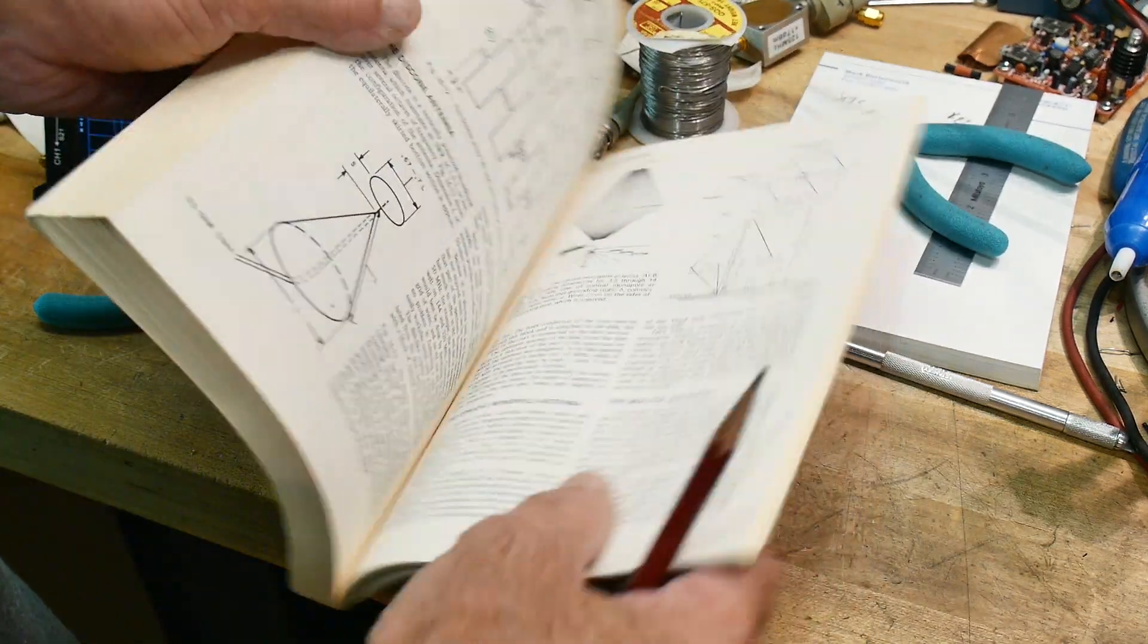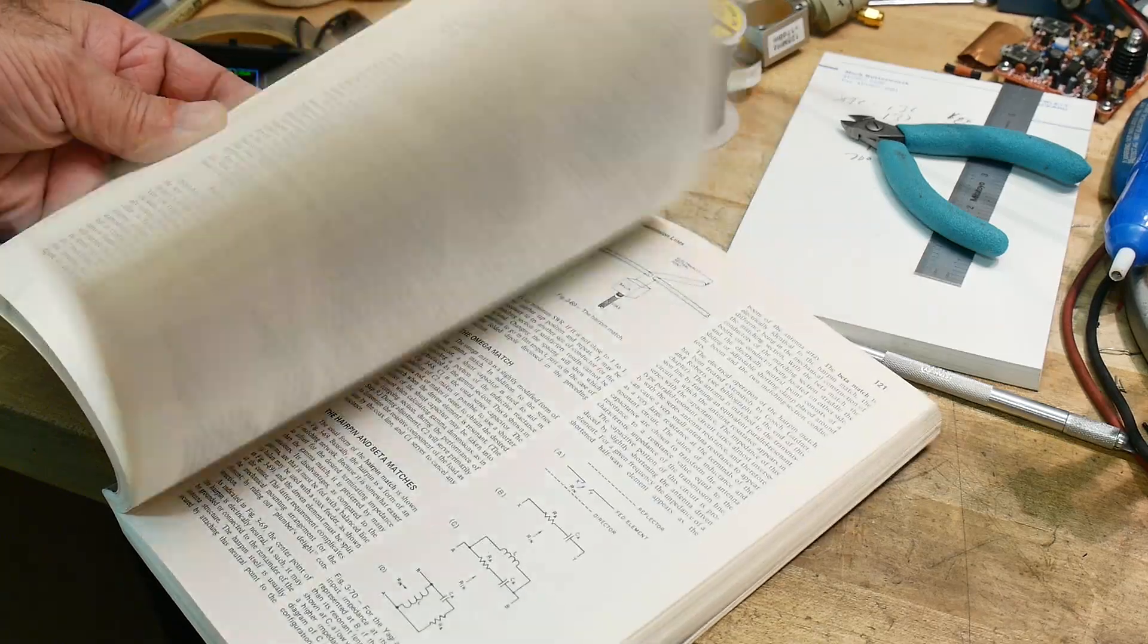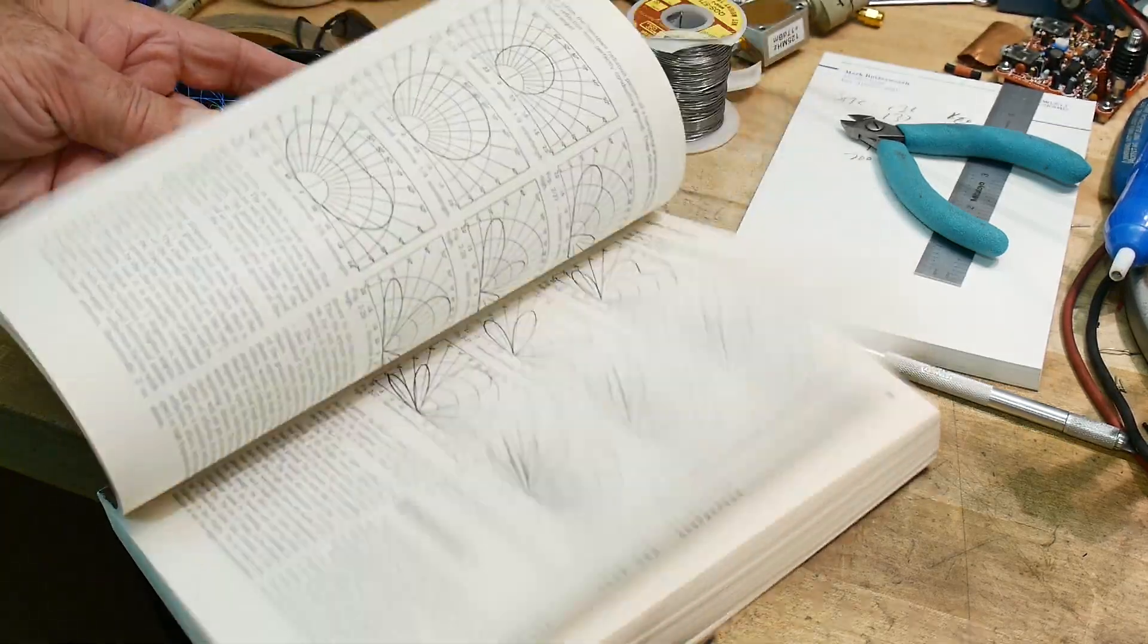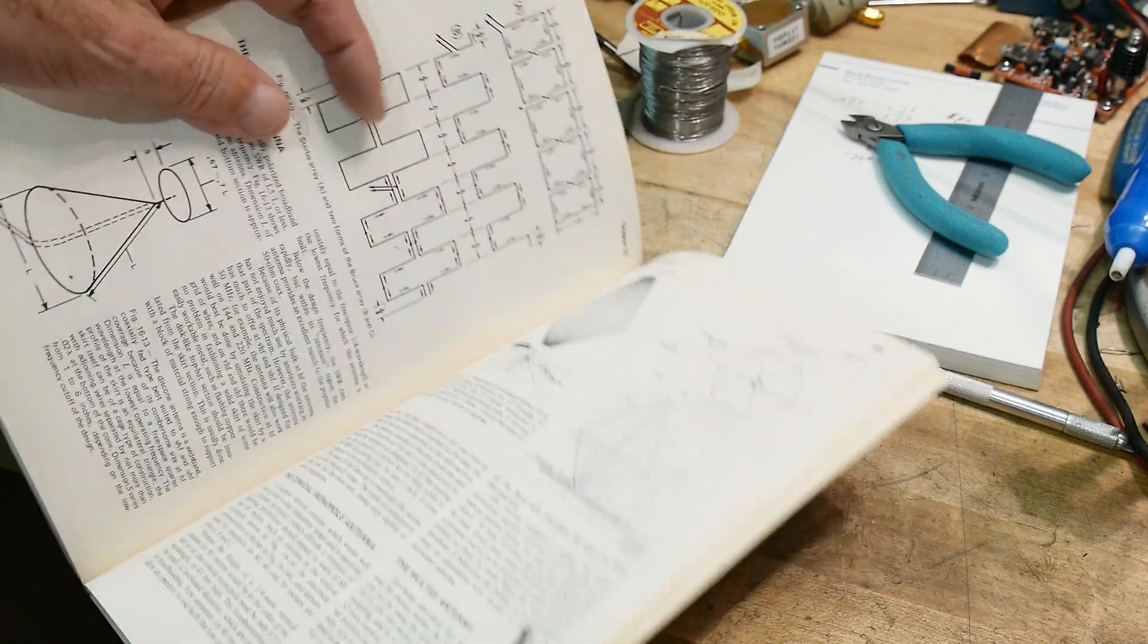So in the book, the book is full of antenna theories and how you match things and Smith charts and radiation patterns, all that stuff.